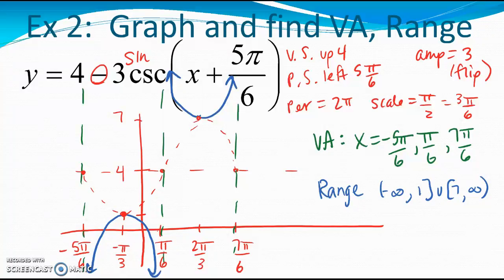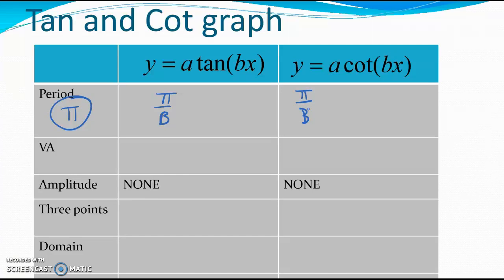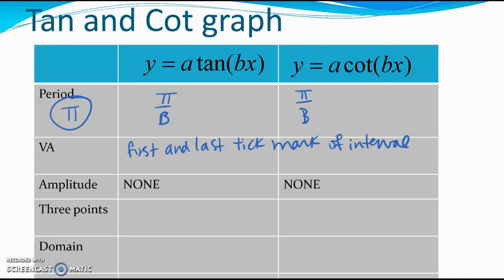The next part of the video addresses tangent and cotangent. These graphs are a little different from the other four. The default period length for tangent and cotangent is pi instead of 2pi, so to find the period we do pi divided by b. The vertical asymptotes are going to be at the first and last tick marks of the interval — a total of five points, with the first and last being asymptotes. Tangent, cotangent, secant, and cosecant do not have an amplitude, since these graphs stretch up to infinity and have no measurable height.